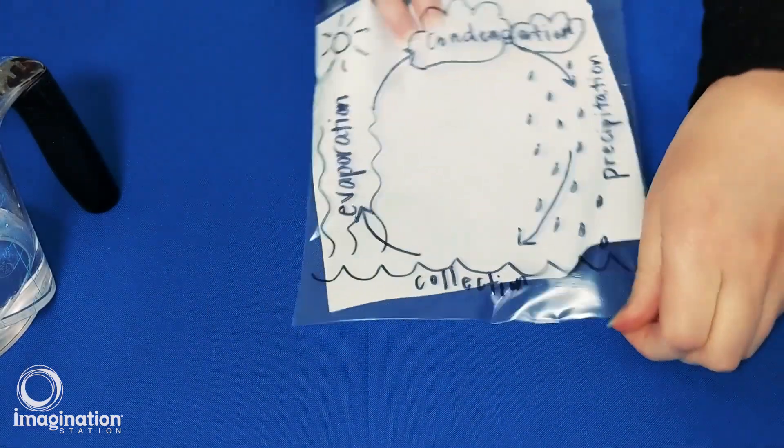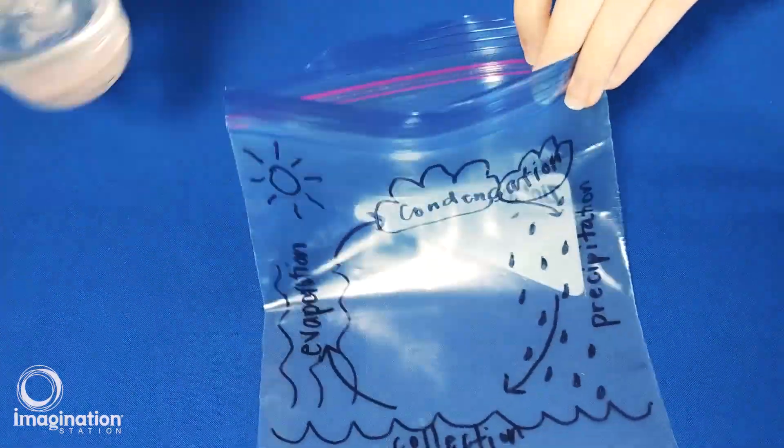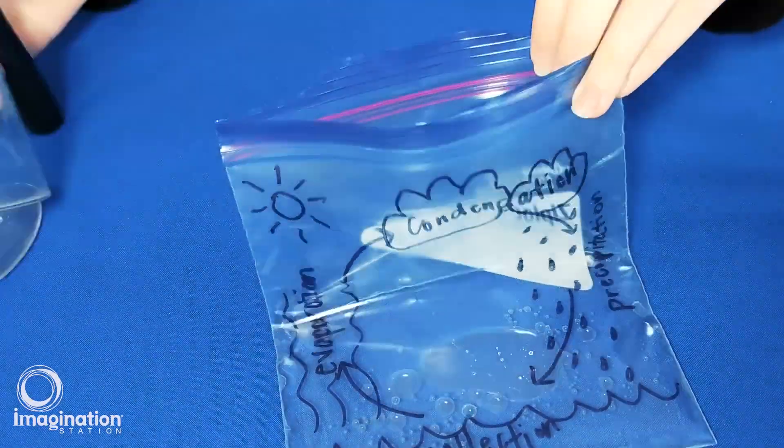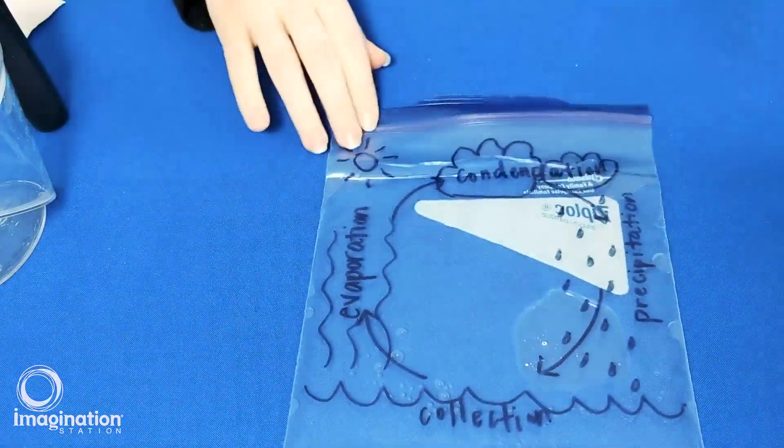Once you're finished drawing the water cycle, pour about a half cup of water into your bag and seal. Use packing tape to hang it in a warm sunny window.